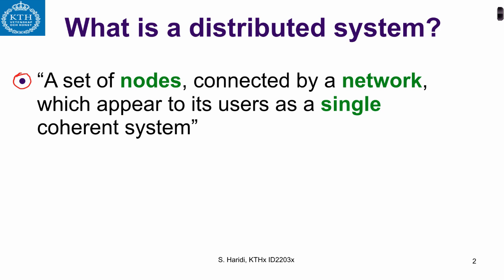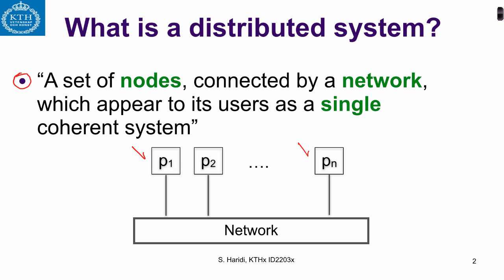We will mainly abstract this notion of physical machines and only talk about processes. So here we have our processes P1 to Pn, and here we have the network. Processes can send messages and can receive messages.